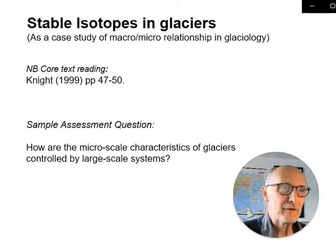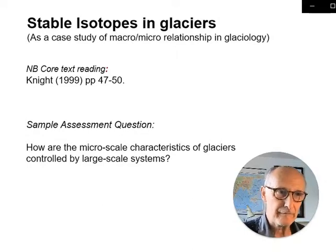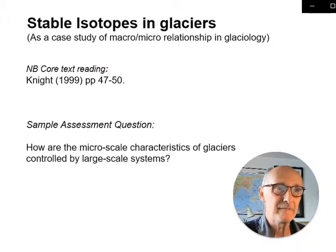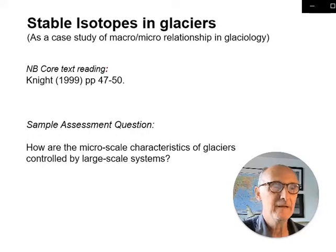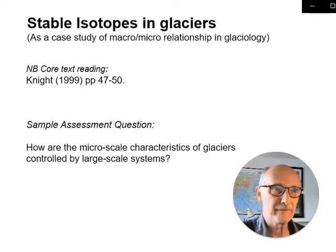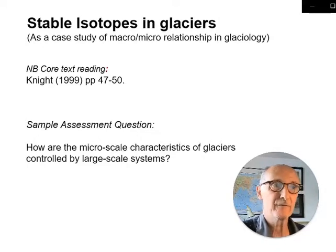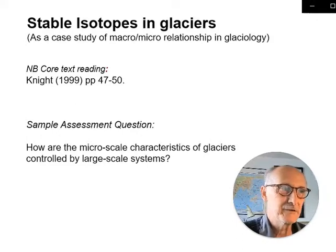Imagine an assessment question: how are the micro-scale characteristics of glaciers — the smallest scale of things in glaciers — controlled by large-scale systems? I want to get into talking about isotopes by thinking about that question. Isotopes — atoms within the glacier and within the atmosphere — are the smallest-scale characteristics we're looking at in this module, but they relate to the big hydrological cycle and global atmospheric circulation.